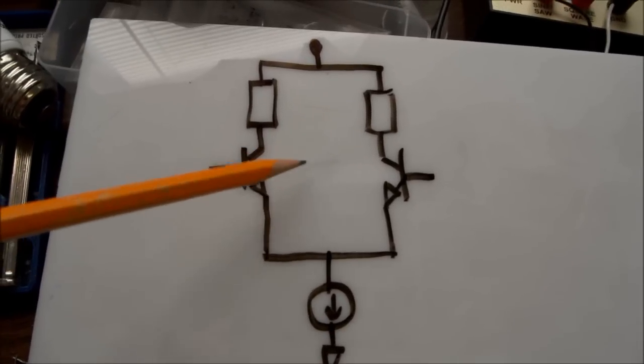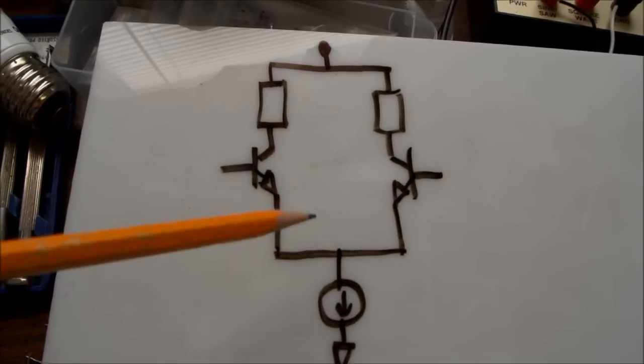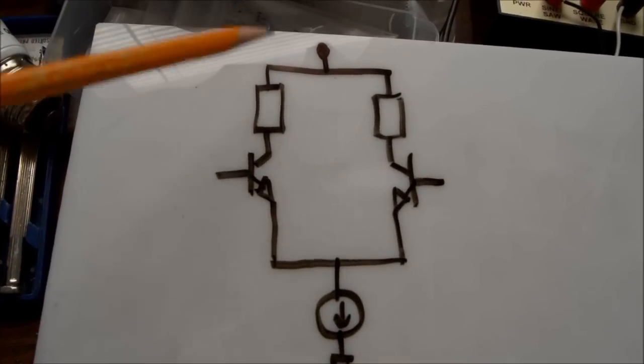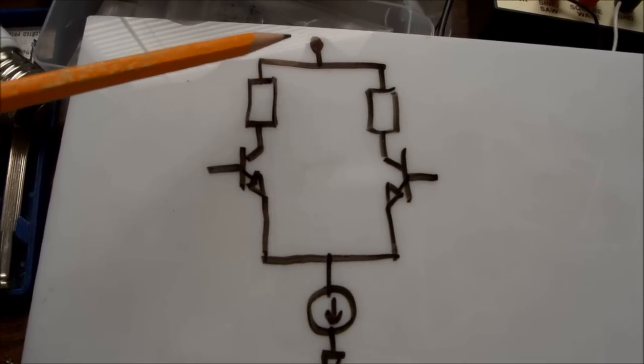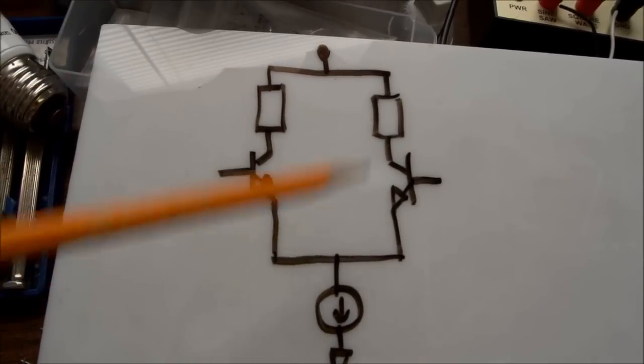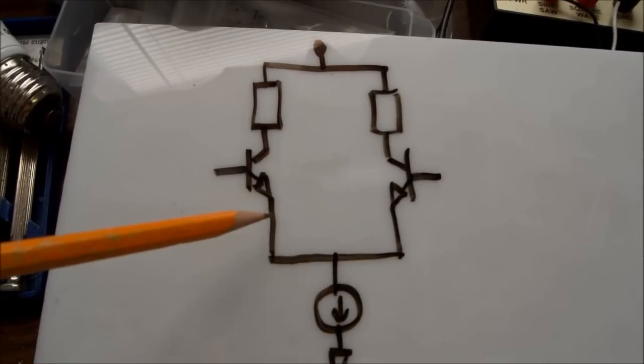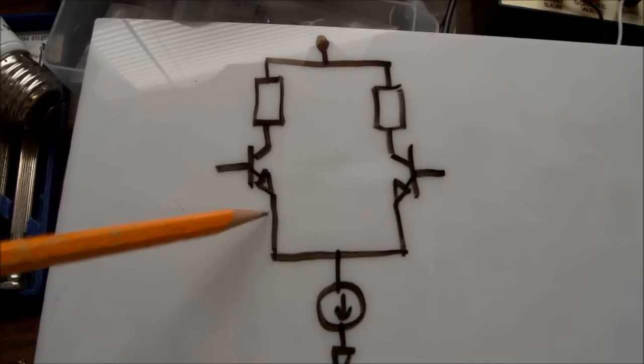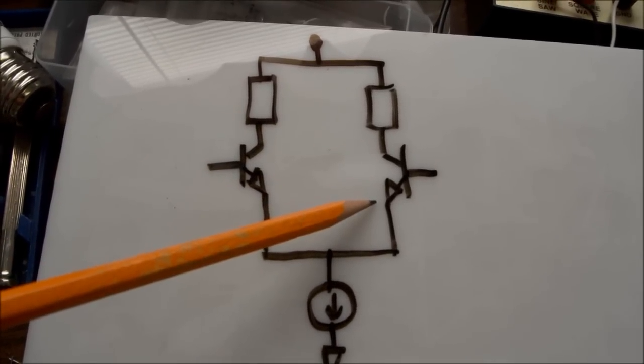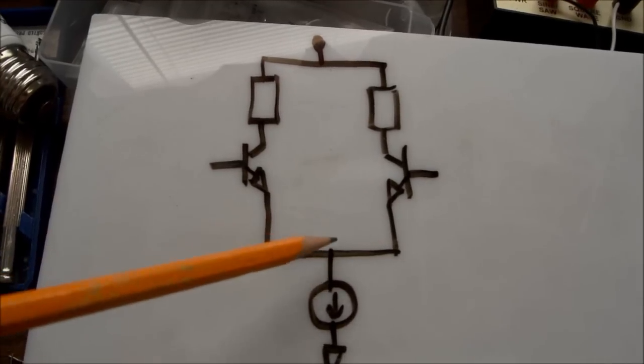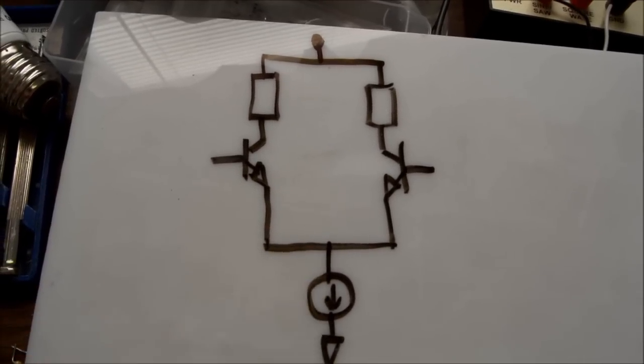If we have matched transistors and all the components are good tolerance and everything, what happens is the current comes and splits through each side equally. So you have a half a milliamp on this side, half a milliamp on this side. And they come together and it's one milliamp.